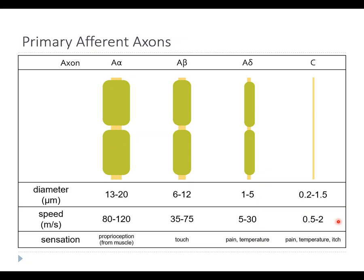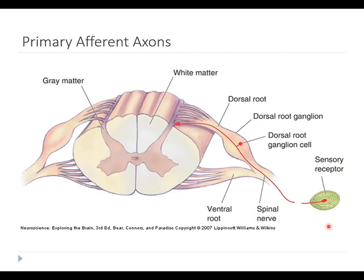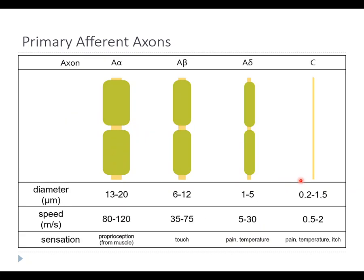These are also very long axons. The sensory receptor is somewhere out in the skin while the dorsal ganglion cell is right by your spinal cord. If this receptor is in your foot and you're tall, the total length of this axon could be several feet. So when we're talking about something moving at 0.5 meters per second, it can take up to a second for that signal to reach the brain.